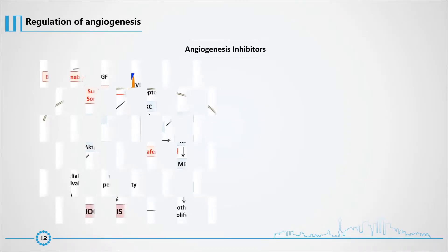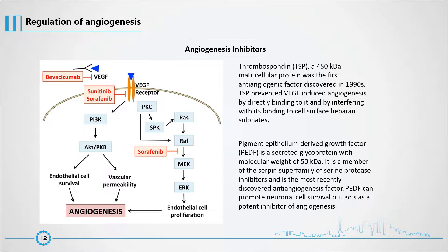Thrombospondin (TSP), a 450-kDa matricellular protein, was the first antiangiogenic factor discovered in the 1990s. TSP prevented VEGF-induced angiogenesis by directly binding to it and by interfering with its binding to cell surface heparan sulfates. Pigment epithelium-derived factor (PEDF) is a secreted glycoprotein with a molecular weight of 50 kDa, a member of the serpin superfamily of serine protease inhibitors, and the most potent inhibitor of angiogenesis. PEDF can promote neuronal cell survival but acts as a potent inhibitor of angiogenesis.